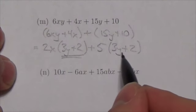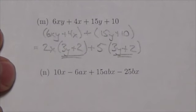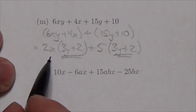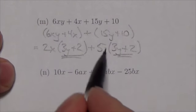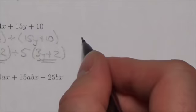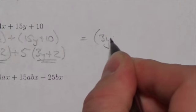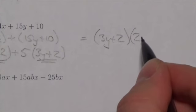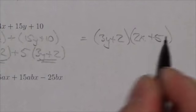That 3y plus 2, 3y plus 2 is common to both. So it has been distributed to a 2x plus 5. So this is going to look like this. This will be 3y plus 2 multiplied by the 2x plus the 5.